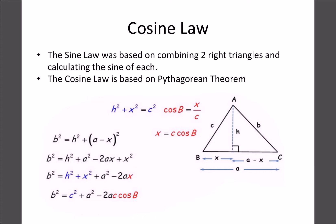Looking at triangle ABC with a vertical height h, from the Pythagorean theorem we get h² + x² = c². We also know cosine of B equals x over c, so rearranging gives us x = c·cos B. The full side b² equals h² + (a − x)², because if this length is x, the remaining base is a minus x. We're basically breaking the triangle into two right triangles and applying Pythagorean theorem twice.